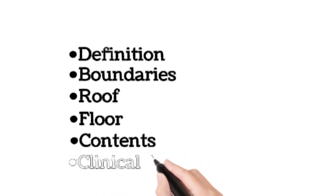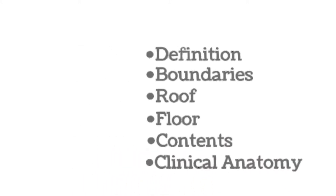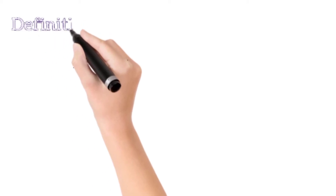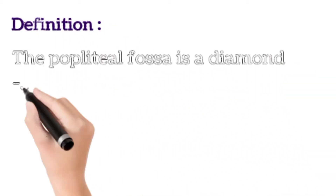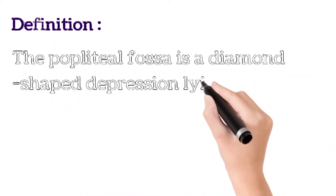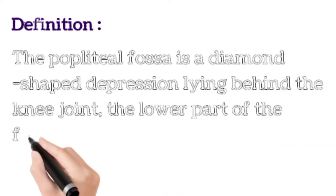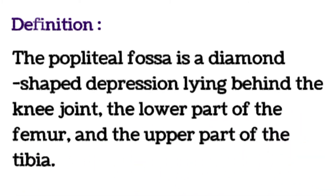Coming to the definition: the Popliteal Fossa is a diamond-shaped depression lying behind the knee joint, in the lower part of the femur and the upper part of the tibia.